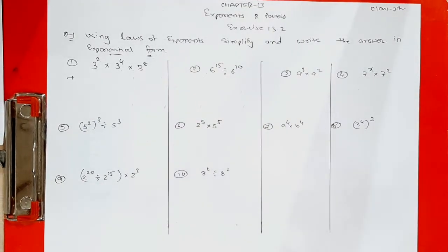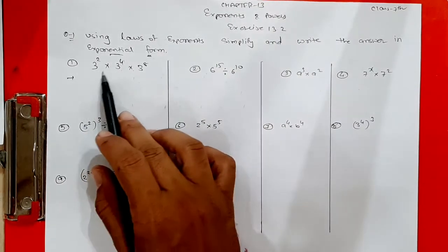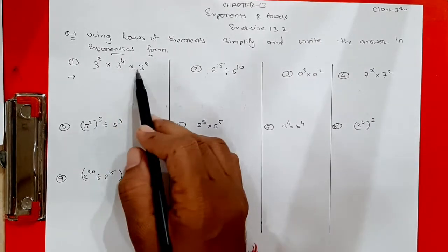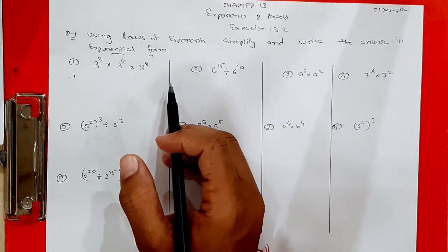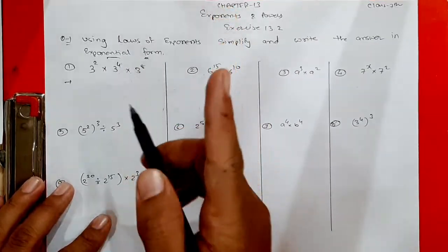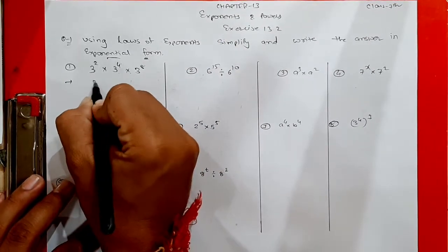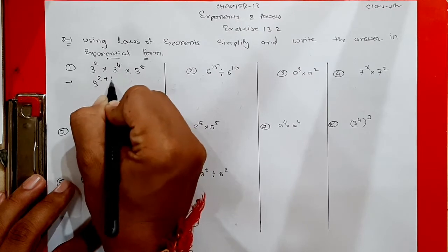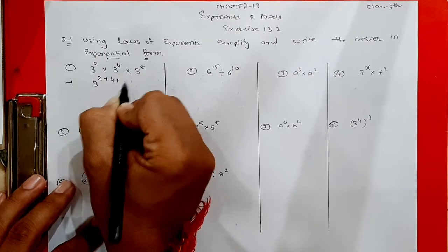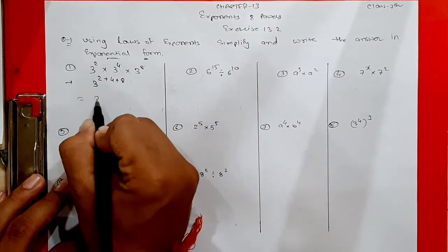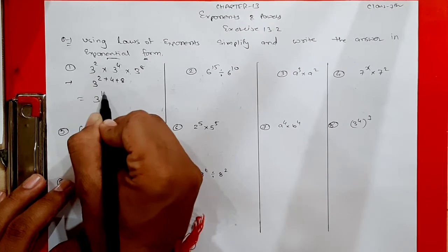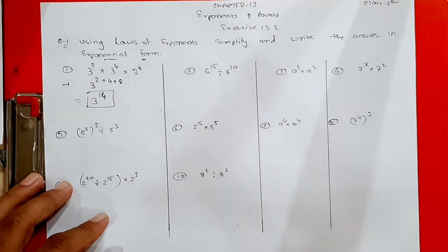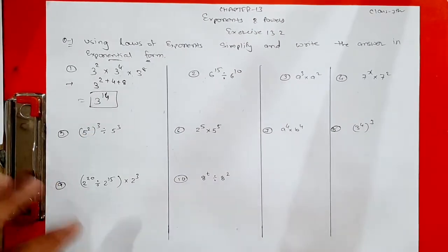In the first question, all bases are the same and all signs are multiplication, so we apply Rule 1 — add the powers. 2 plus 4 plus 8 equals 14, so the answer is 3 raised to 14 in exponential form.